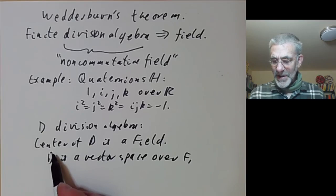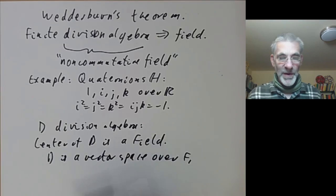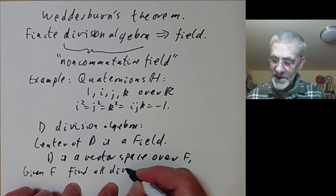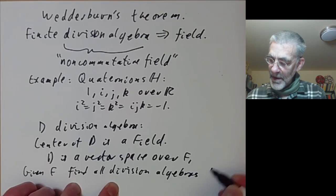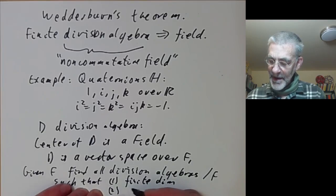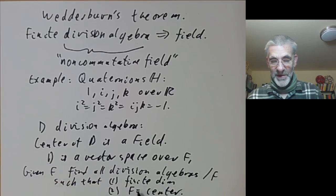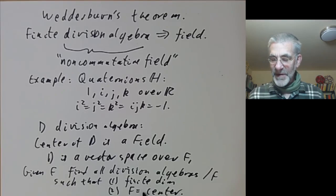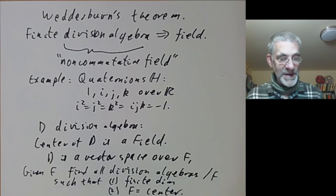In general if you look at infinite dimensional division algebras over a field, it's rather hard to classify them, but you can ask the following question. Given a field F, find all division algebras over F such that, first of all, they're finite dimensional, and secondly, F is equal to the whole of the center. If F isn't the whole of the center, you just have a bigger field and repeat with that.